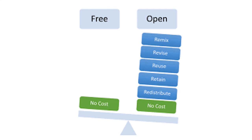This is why open means so much more than free. A material can be free but not allow any of the permissions afforded by those five R's. Saving students money is important and has been shown to reduce course withdrawal rates and the financial burden of a college education, but there is so much more that can be done with Creative Commons licensing on open material.